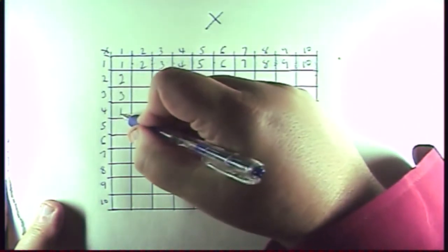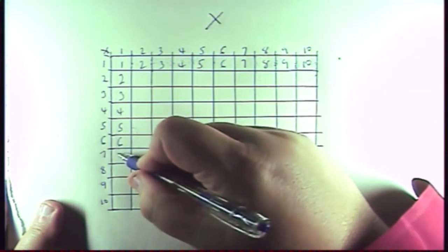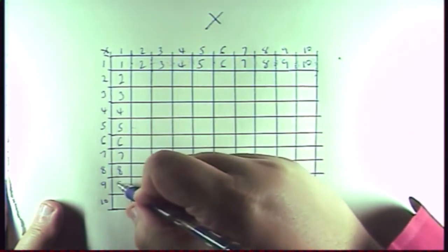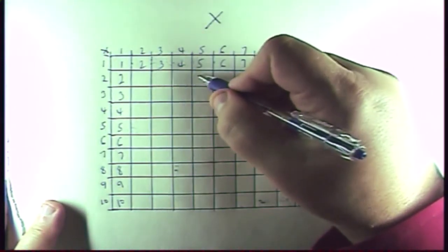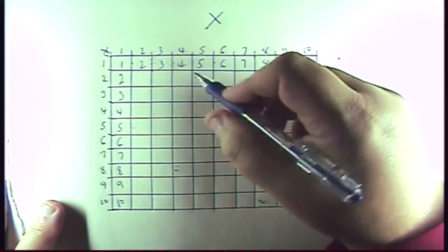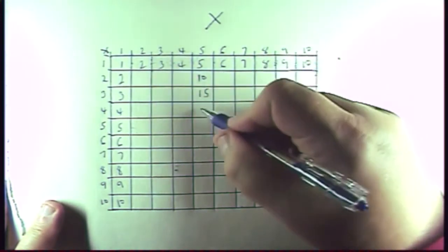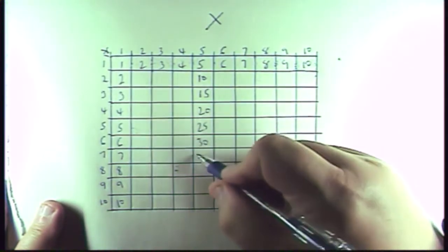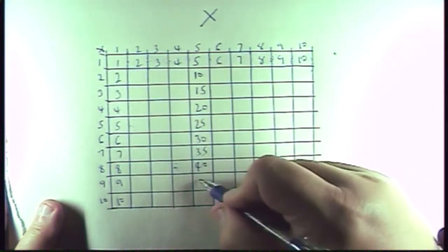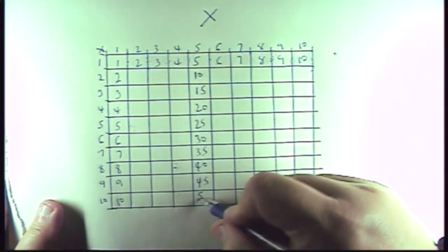Going down the ones column: one, two, three, four, five, six, seven, eight, nine, ten. And then fives are easy. Five times two is ten, and then you just count up five: fifteen, twenty, twenty-five, thirty, thirty-five, forty, forty-five, and fifty.